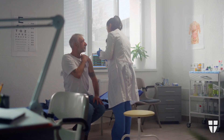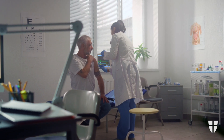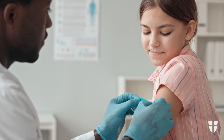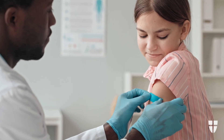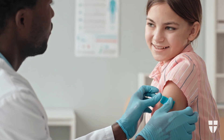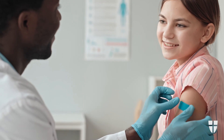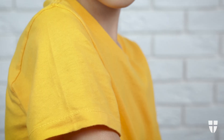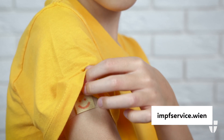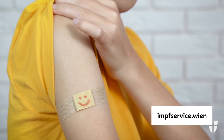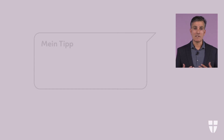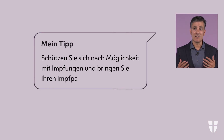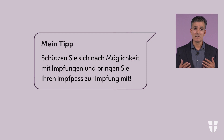Vaccinations can also help you stay healthy. The Children's Vaccination Program includes free vaccinations such as mumps, measles, rubella, diphtheria, tetanus, and polio. All questions about vaccination as well as the exact vaccination schedules can be found on the website impfservice.wien. My tip: protect yourself with vaccinations whenever possible and bring your vaccination certificate, Impfpass, with you to the vaccination.